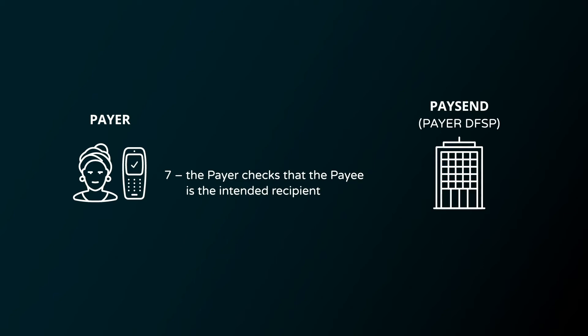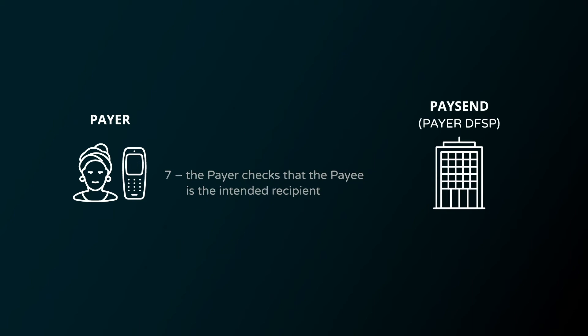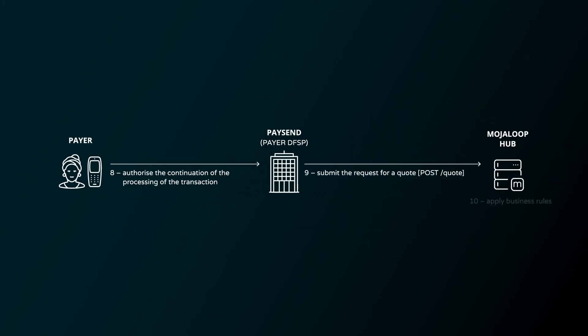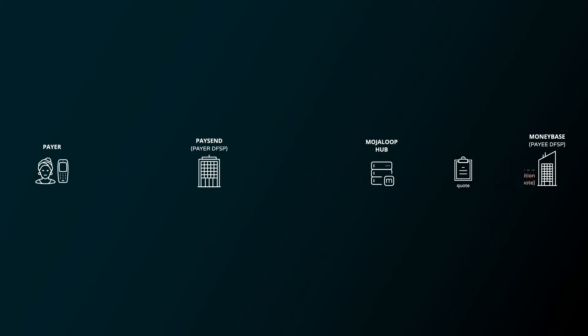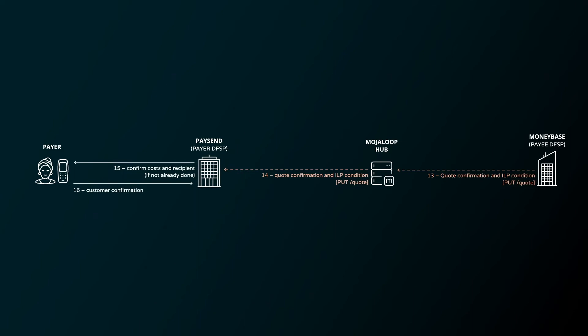But in our scenario, she is using a mobile phone with a client application, so she can afford to be asked for confirmation at this early stage as well. She confirms her intention to pay John, and now that step one is complete, PaySend will create a quote for the transaction to ensure that both DFSPs and customer accounts are compliant and supported. PaySend submits the quote to the quote service in Mojaloop, which in turn delivers it to MoneyBase. MoneyBase then creates a cryptographic deposit slip in the form of an ILP packet and a condition, and sends it back through the Mojaloop switch to PaySend. Gladys and PaySend are satisfied with the charges and services offered by MoneyBase, so now it's time to prepare the funds for transfer.